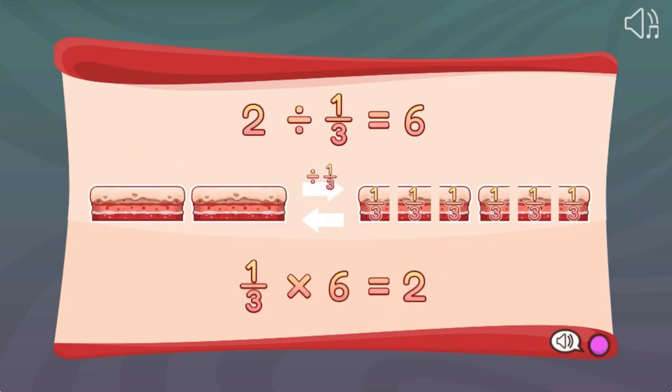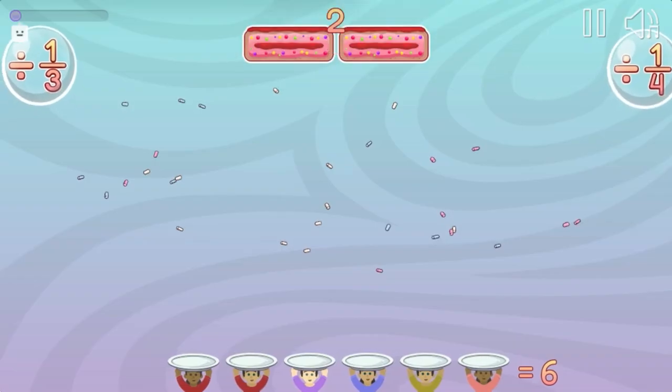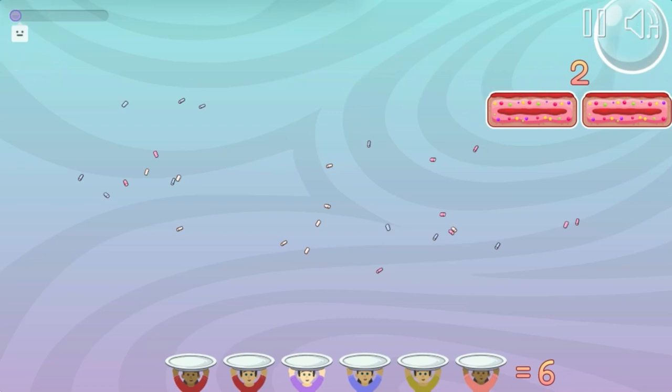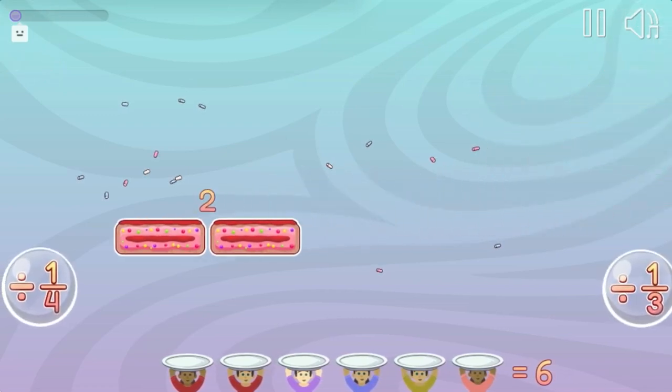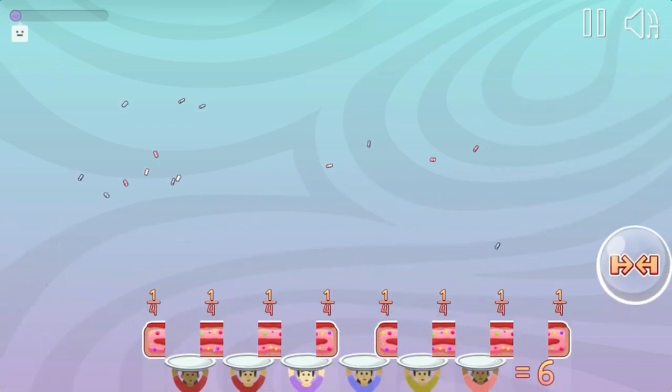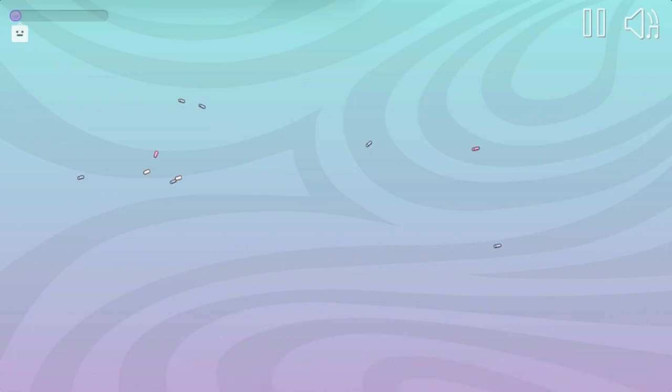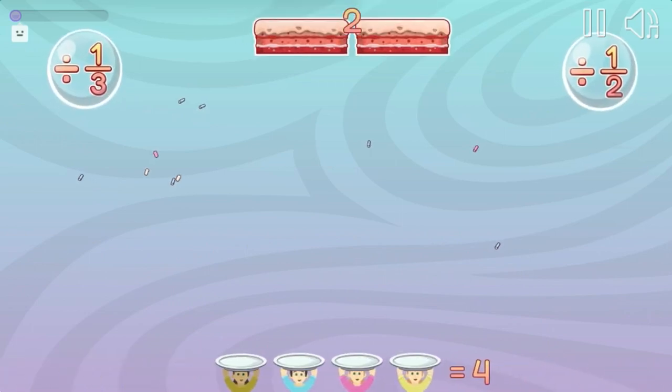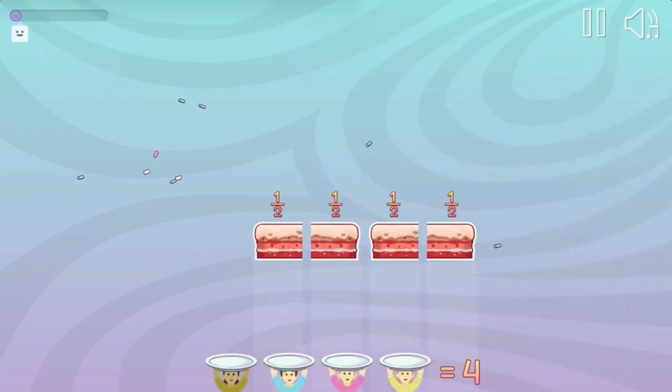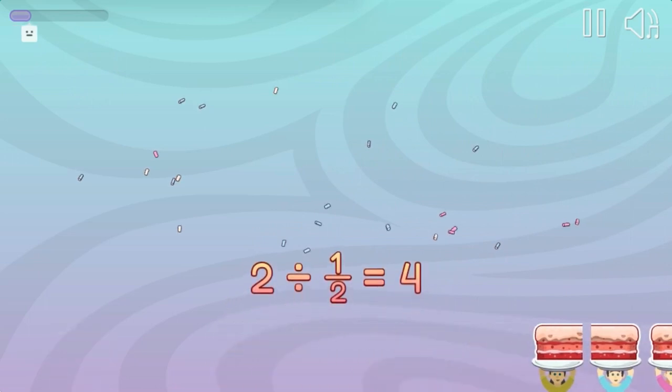Use the arrow keys to move the falling cakes to the correct multiplication or division fraction to slice the cake into pieces to serve all the guests. Use your math skills to correctly slice the cakes into the right amount of pieces to serve all your guests.